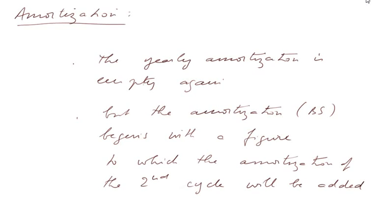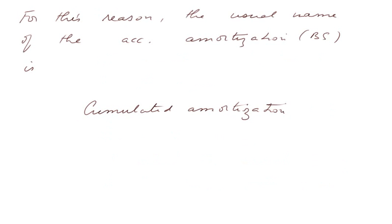Amortization. The yearly amortization account is empty again at the beginning of cycle number 2, but the amortization BS begins with the figure to which the amortization of the second cycle will be added. For this reason, the usual name of the accounting amortization balance sheet account is cumulative amortization.